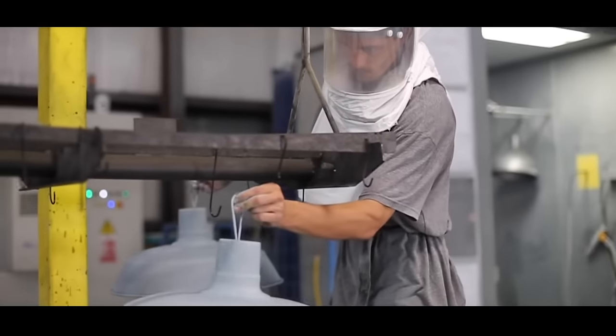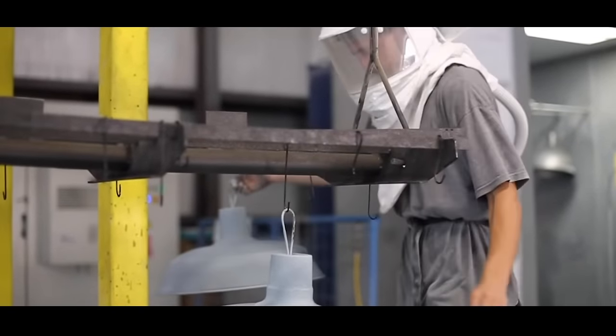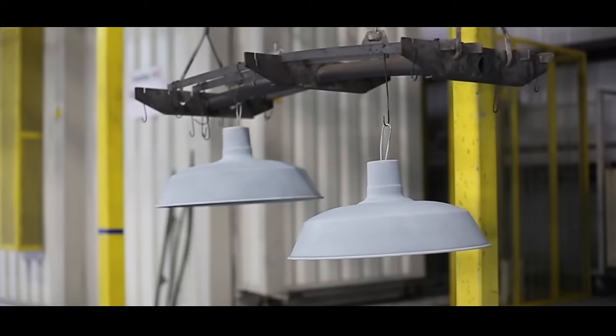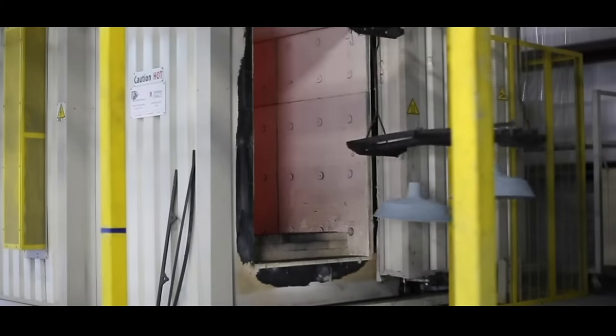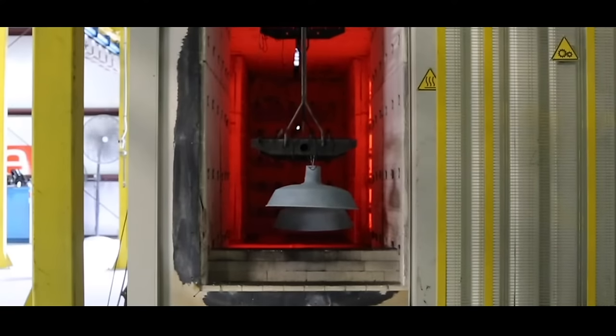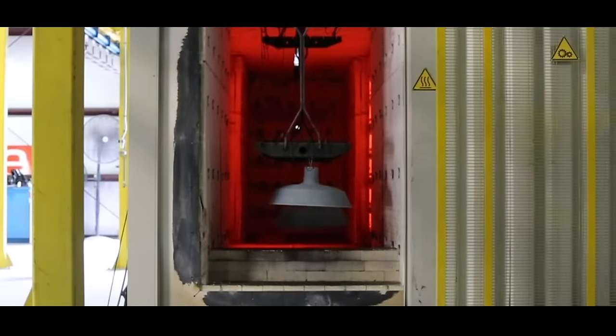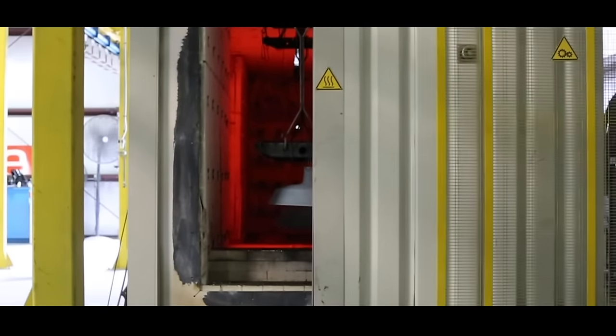The shade then takes its first trip through a special porcelain enameling oven. Temperatures inside this oven can reach up to about 1800 degrees Fahrenheit. In these extremely hot conditions, the porcelain is permanently bonded and cured with that steel shade.